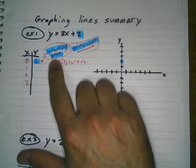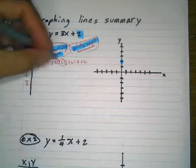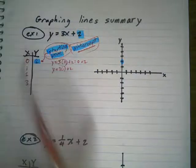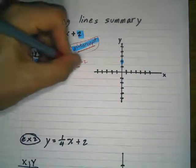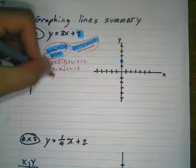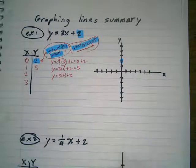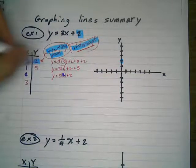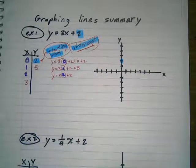Now if I plug in 1 for x, we get y equals 3 times 1 plus 2. I multiply 3 times 1, which is 3, and 3 plus 2 equals 5. If I plug in 2, I get 3 times 2 plus 2. So 3 times 2 is 6, and 6 plus 2 is 8.